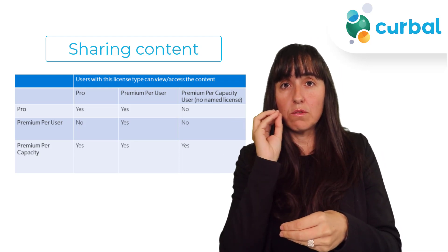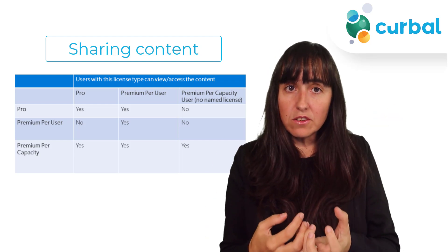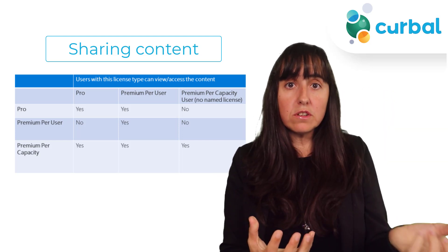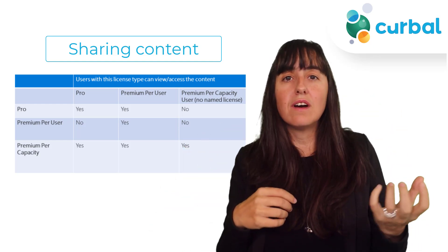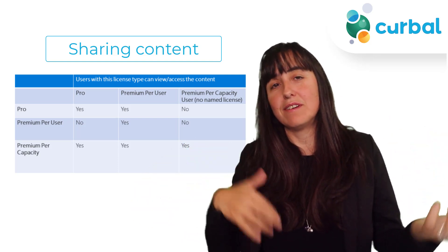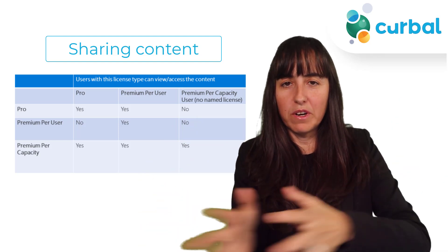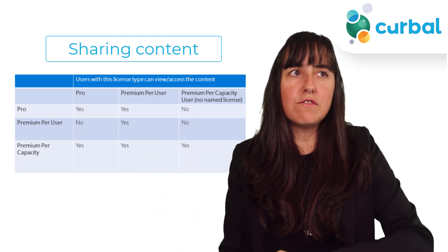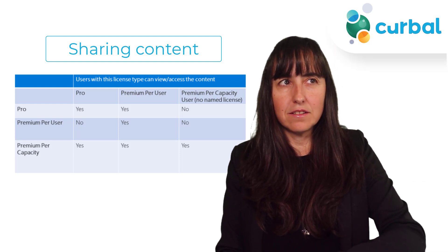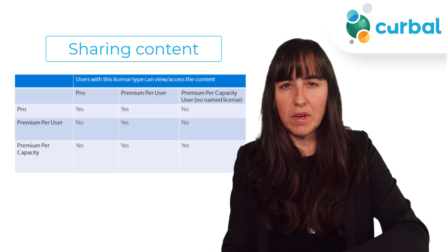If you are a Premium Per Capacity user — meaning you're a free user on a premium workspace — a Pro user will be able to see the content, same as before. A Premium Per User licensed user will also be able to see the content. And of course, a free user on a premium capacity can see content on a premium capacity workspace. So the only question for me is: why wouldn't a user on a capacity license see something that a Premium Per User licensed user created?